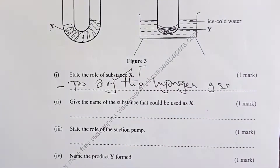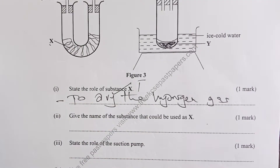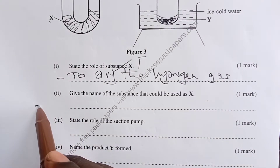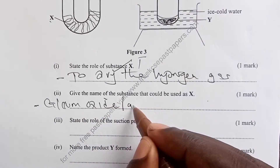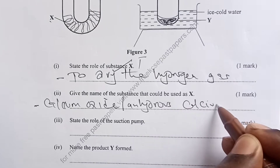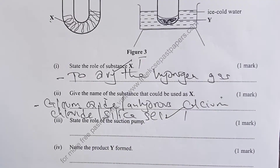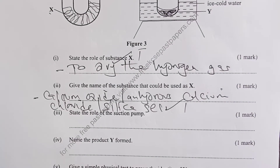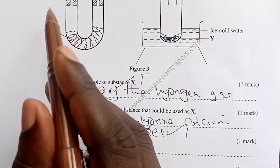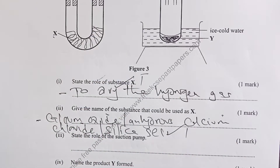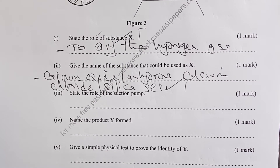To name a substance that could be used as X, it must be a solid drying agent since it is packed in a U-tube. It can be calcium oxide, anhydrous calcium chloride, or silica gel — any of these earns one mark. A liquid cannot be used in a U-tube because the gas being passed through would push the liquid up the other arm.